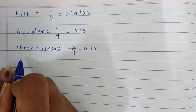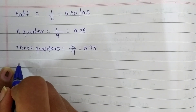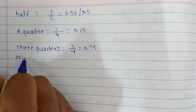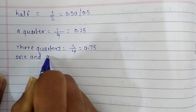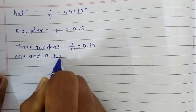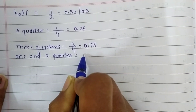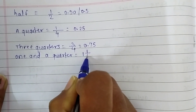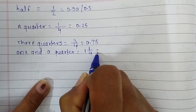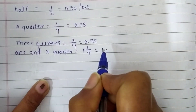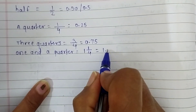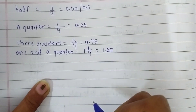Now we are going to see how one and a quarter is written. One and a quarter is written as one and one upon four in fraction form, and it is written as 1.25 in decimal form.